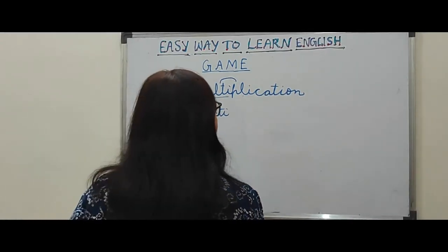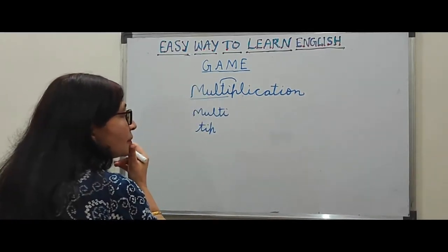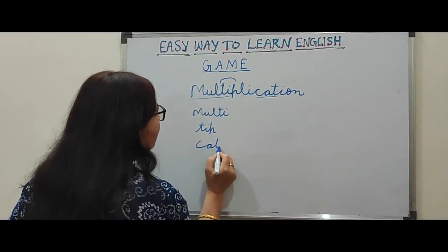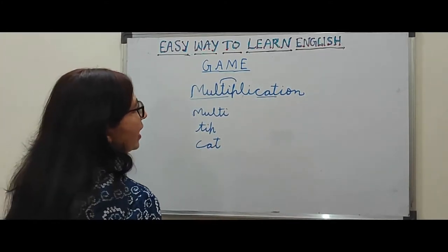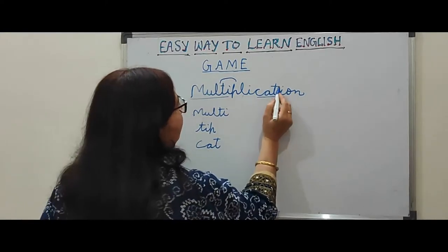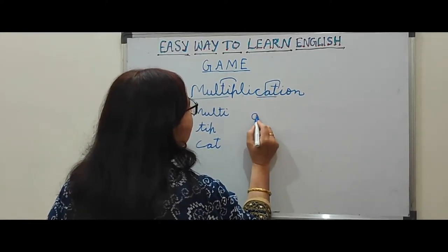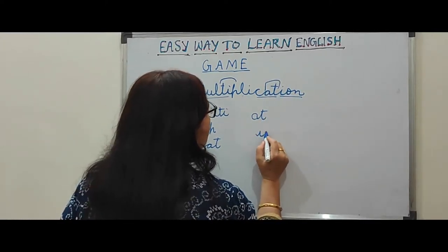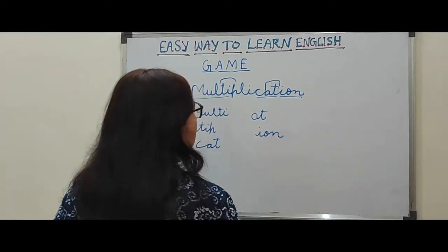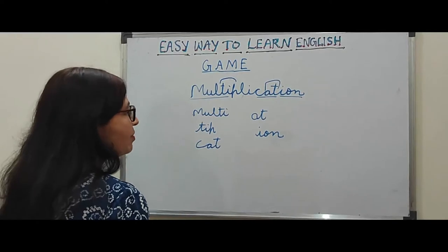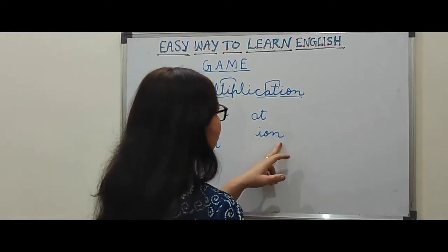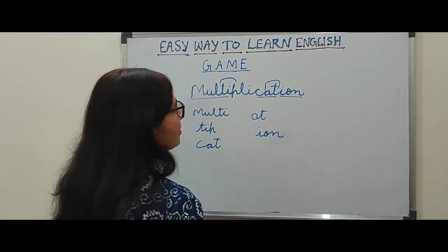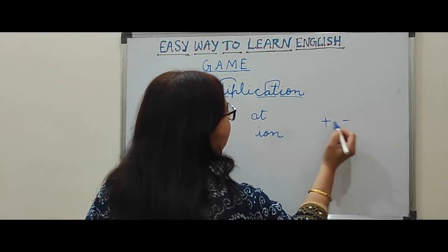Let's find some more words. 'Cat' — C-A-T. And 'at' — one more word is 'at.' And 'ion' — I-O-N. This is a chemistry word. You find this in chemistry: plus ion and minus ion. Like this, I-O-N.